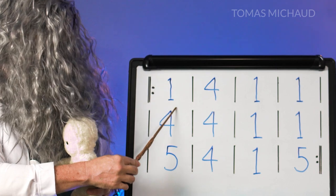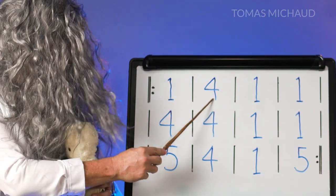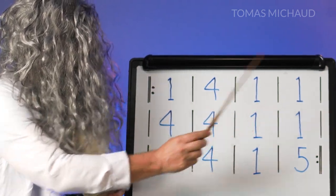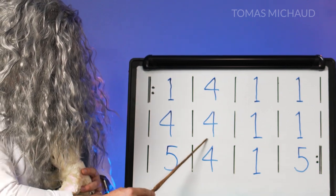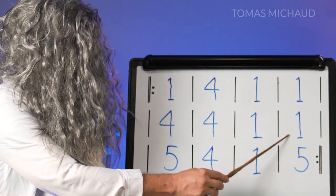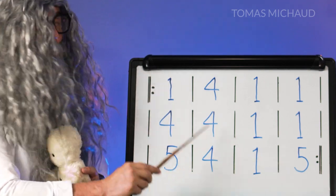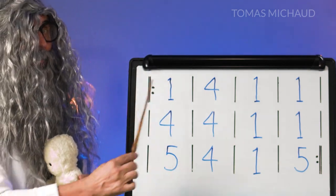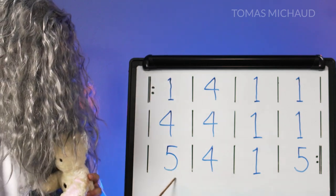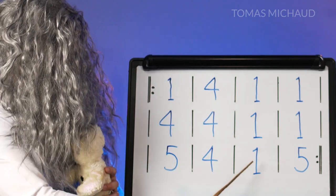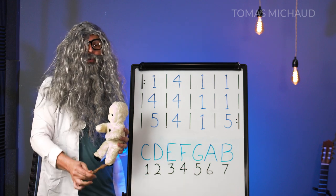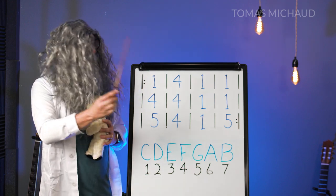Now the 12 bars follow this same pattern each time. We start with the I chord, then the IV chord. We go on to two bars of the I chord, two bars of the IV chord, two more bars of the I chord. Then the final four bars we call a turnaround because it turns around to the beginning: five, four, one, five. That brings you back to the beginning.